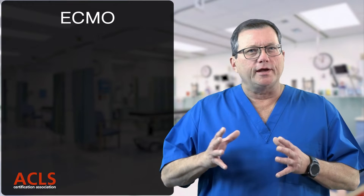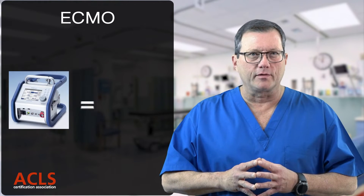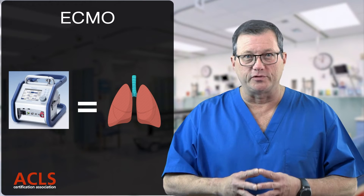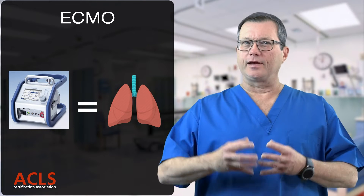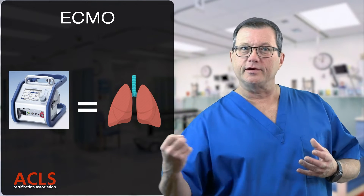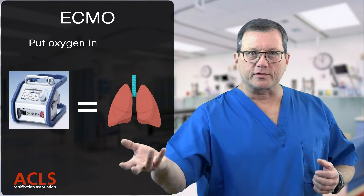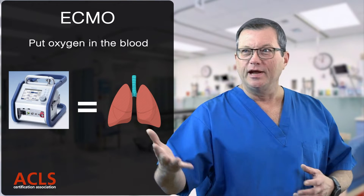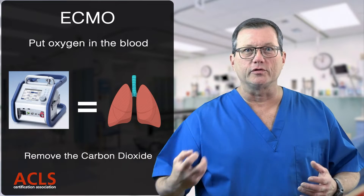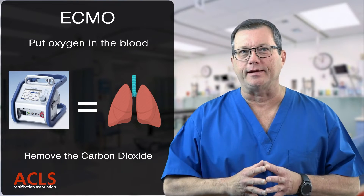When you look at an ECMO machine, what you're really looking at is a pair of lungs — that's what the ECMO machine does. It can take blood from a human, send it to the ECMO machine, the machine will put oxygen in that blood, remove the CO2, and return that oxygenated, clean blood back to the body.